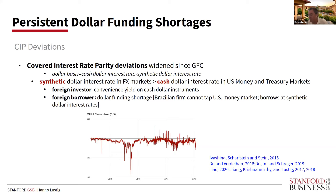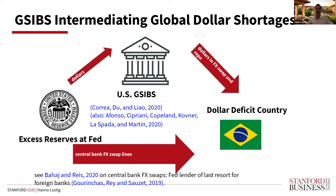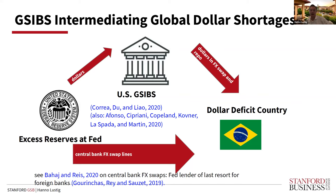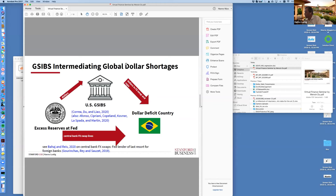What Wenjin is going to focus on is the role of big U.S. banks in intermediating these occasional global dollar shortages. What she's going to show is that basically these banks funnel dollars from their excess reserve holdings at the Fed to these deficit countries. Occasionally the Fed will also directly step in and provide FX swap lines itself. Let me stop right here and allow Wenjin to take over and give her presentation.